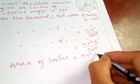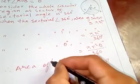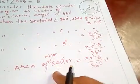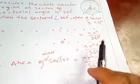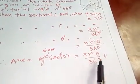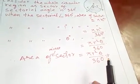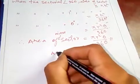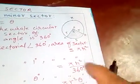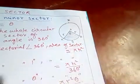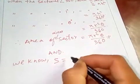Therefore, the area of the minor sector is π r² θ over 360, where r is the radius and θ is the angle in degrees. Now if the radius and the arc length AB are given instead of the angle, how do we find the area? This is another form for the area of the minor sector.